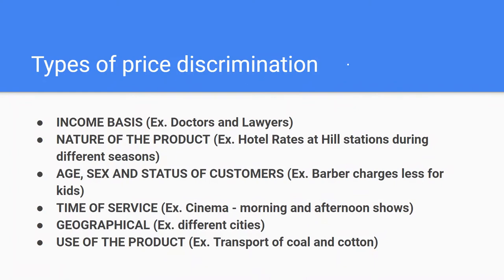Price discrimination usually happens in different ways. It can be on an income basis — for example, doctors and lawyers charge more from rich people than the poor. It can also be on the basis of the nature of product, like when two prices are charged by hill stations in different seasons, and it can also be based on the demography of consumers, like when barbers charge less for kids. There is also the time of service, geographical locations, and the use of the product.